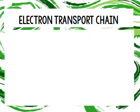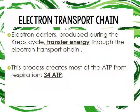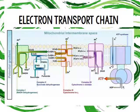From the Krebs cycle, electron carriers move through the electron transport chain. This is where you get most of your ATP — 34 ATP molecules. Combined with glycolysis and the electron transport chain, you get 36 ATP created from one glucose molecule.